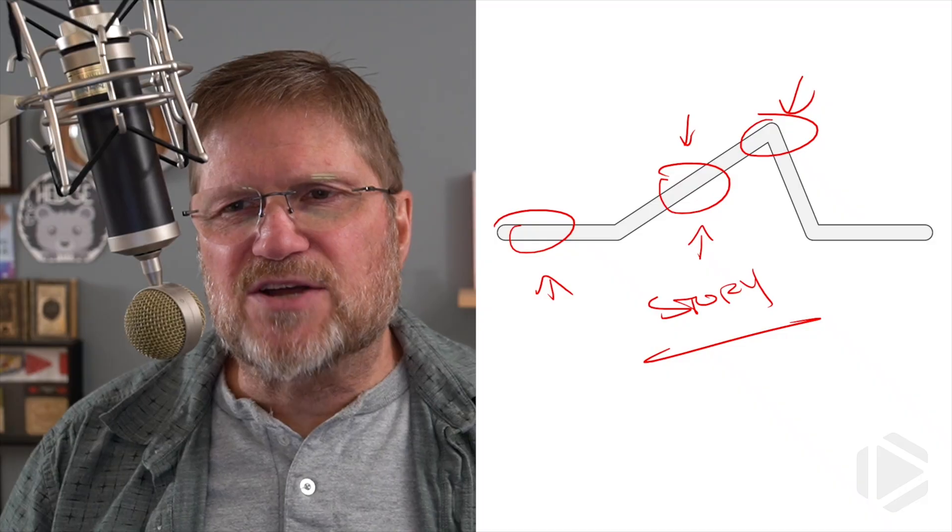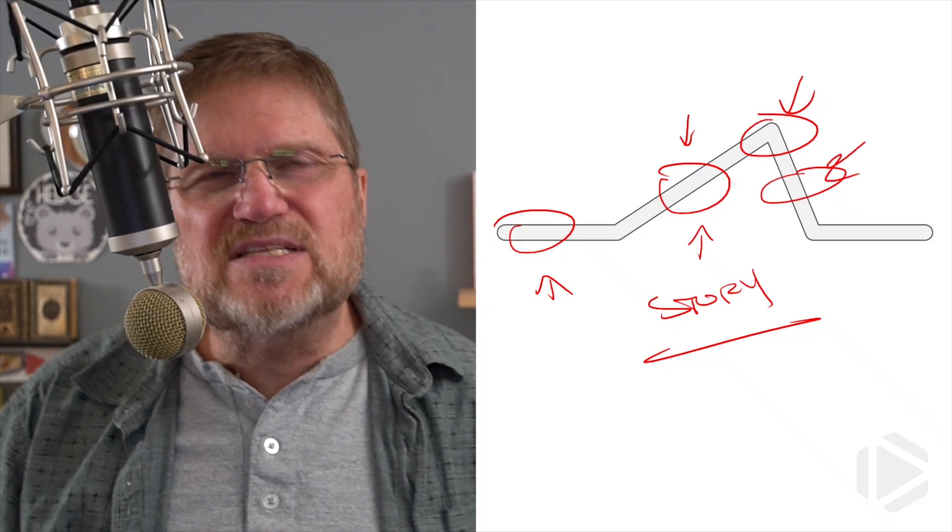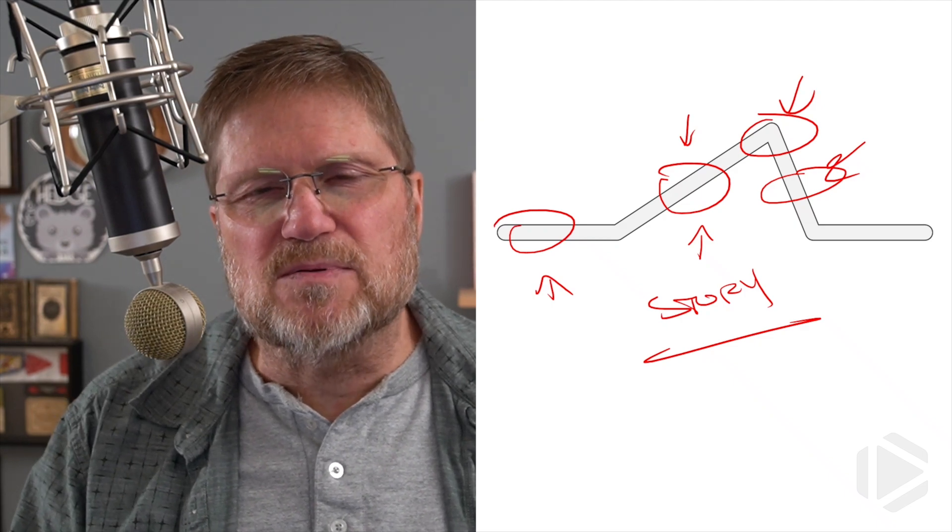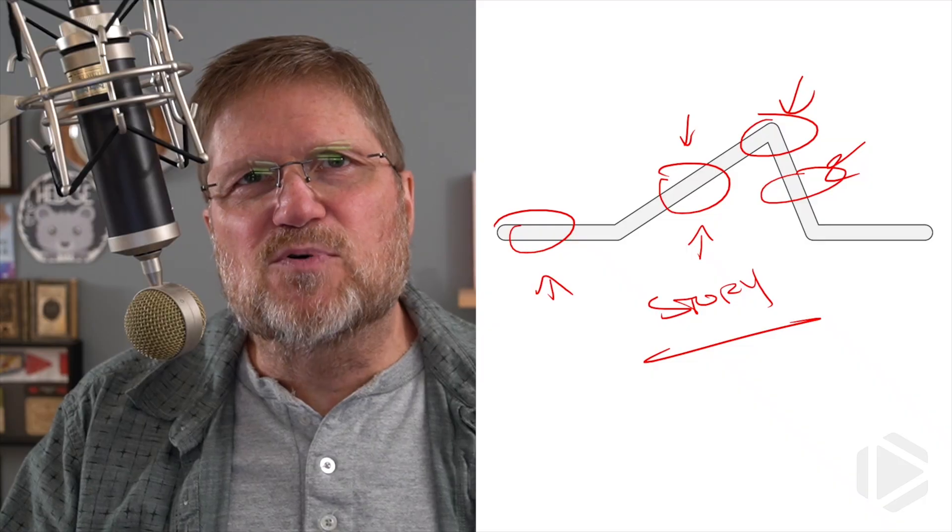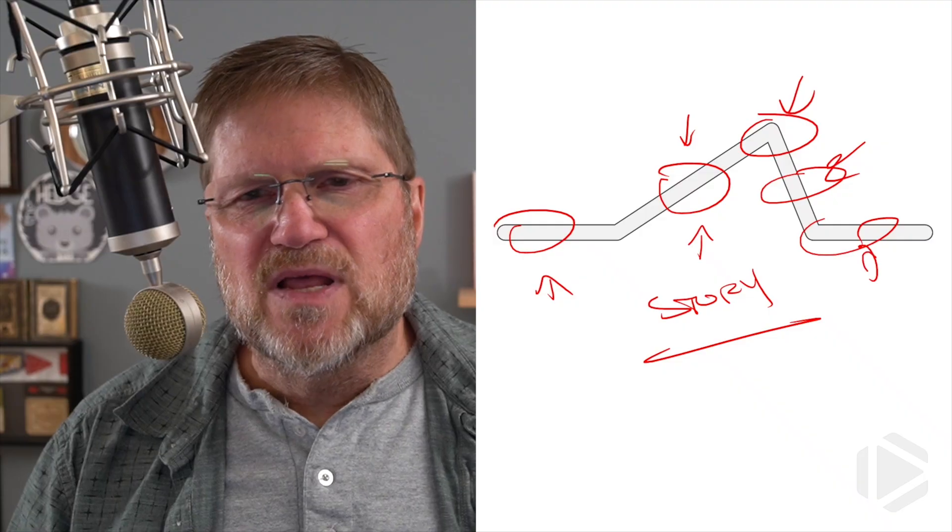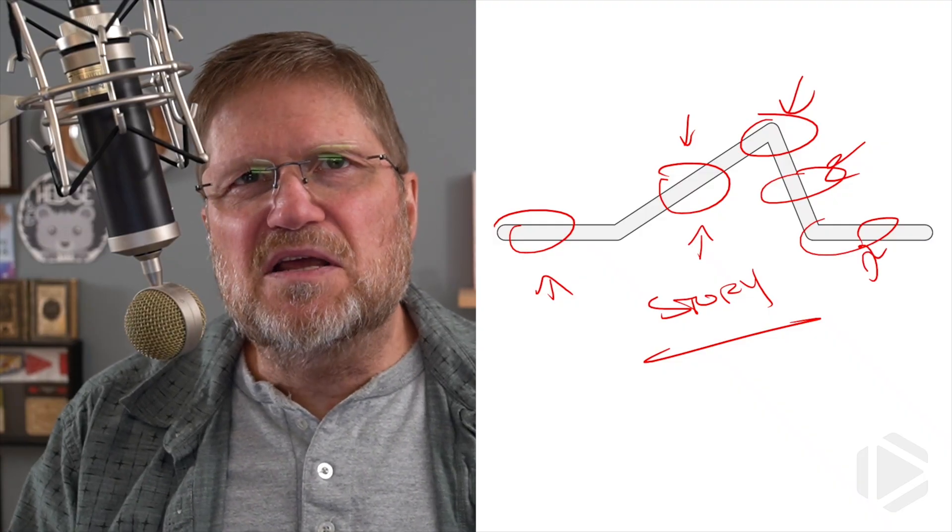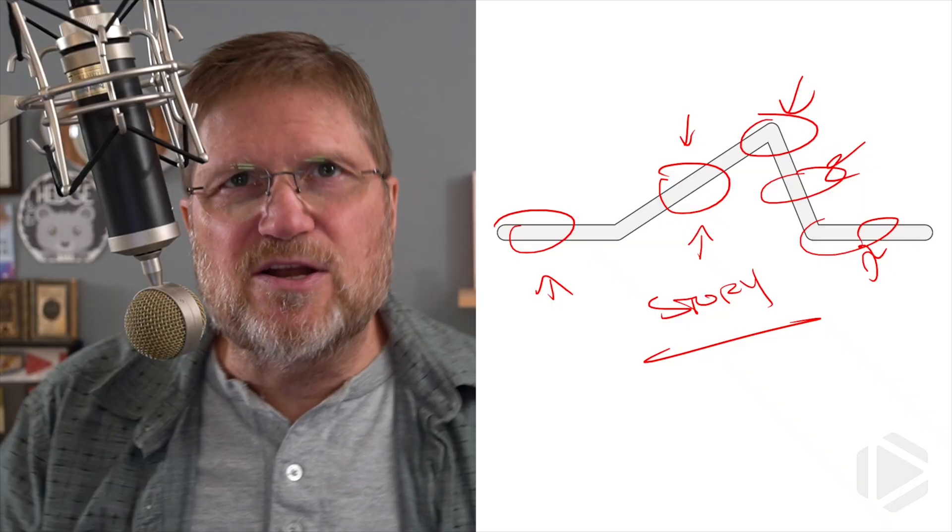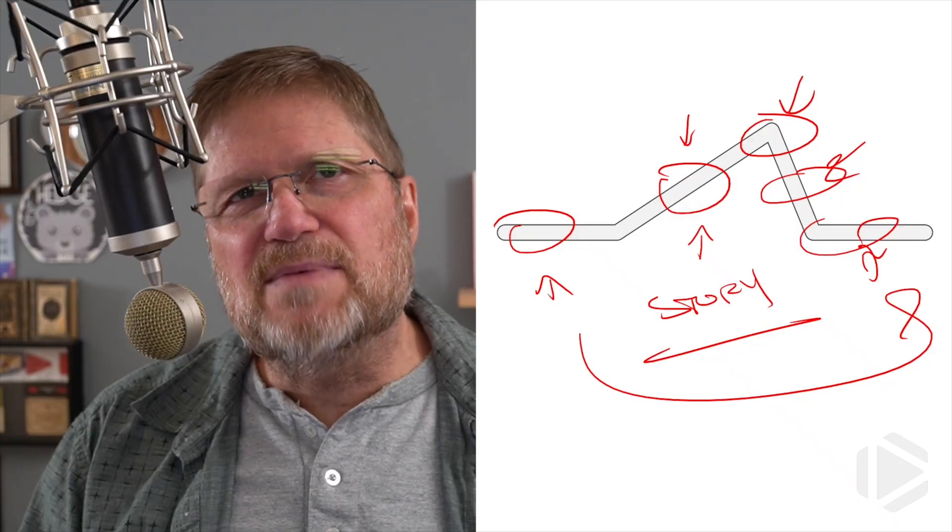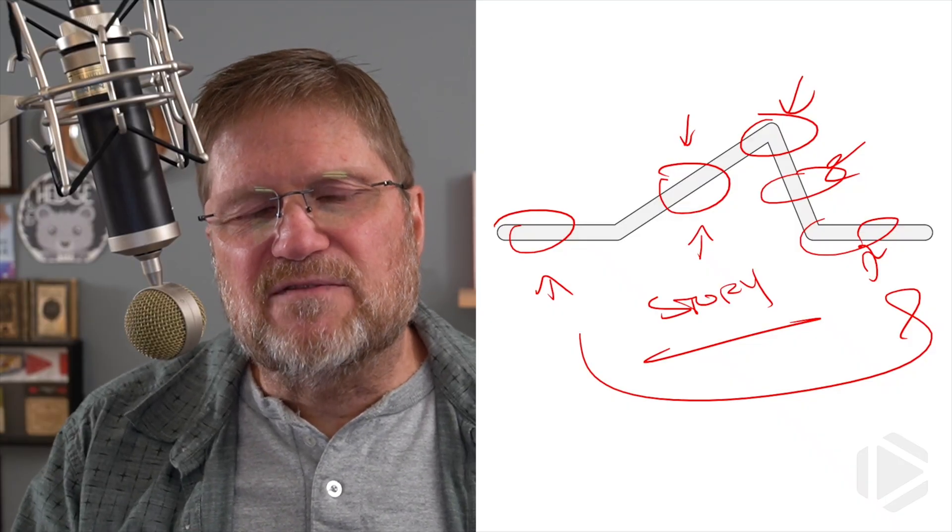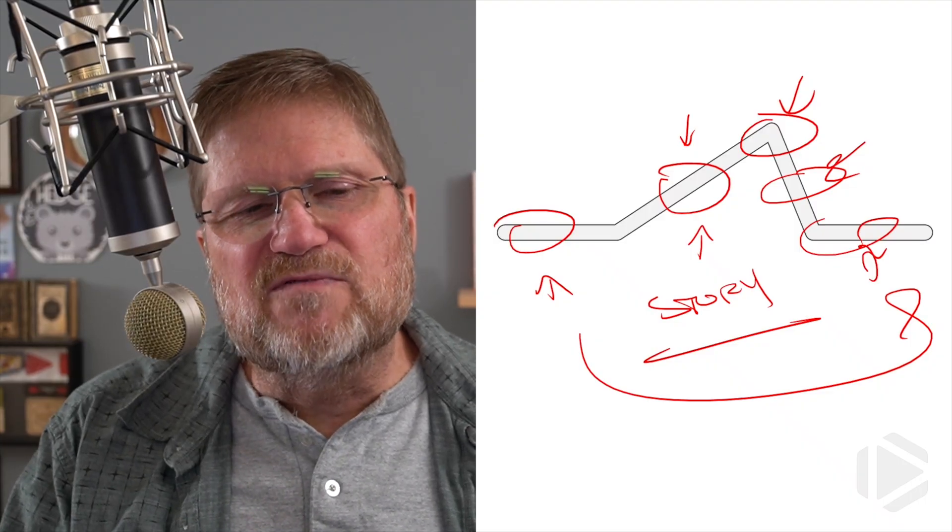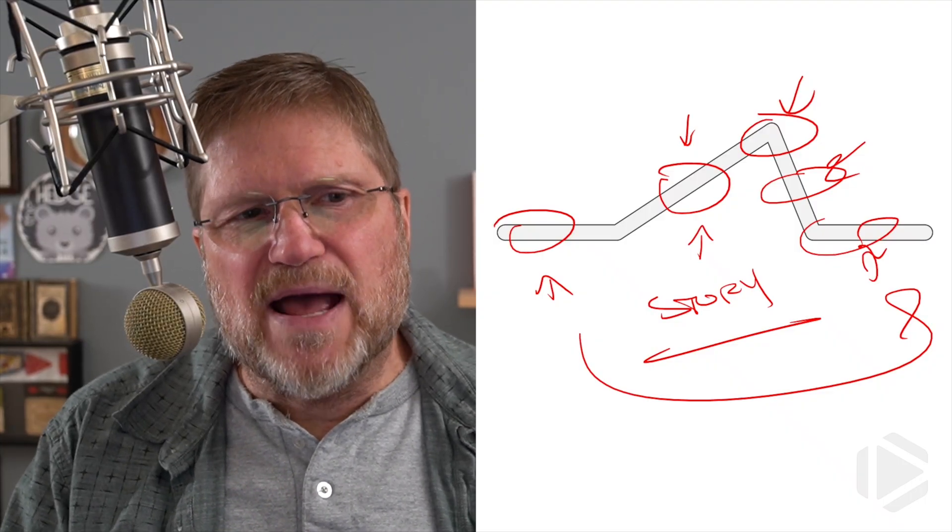Then I have my falling action over here and this is going to be the initial set of things I did to correct the problem. This is where I put in my temporary fix. Then I'm going to have my resolution down here and this is going to be talking about a permanent fix. I also want to know how I'm going to prevent this problem from happening in the future.